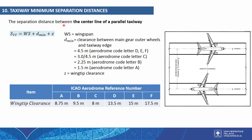The separation distance between the centerlines of parallel taxiways (STD) is calculated as: wingspan (WS) plus D minimum, where D minimum is the clearance between main gear outer wheels and the taxiway edge. D minimum depends on the aerodrome code letter (A, B, C, D, E, F), and Z is the wing-tip clearance based on the ICAO aerodrome reference number in meters.